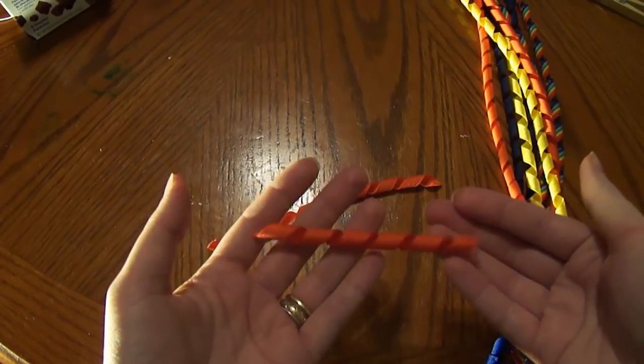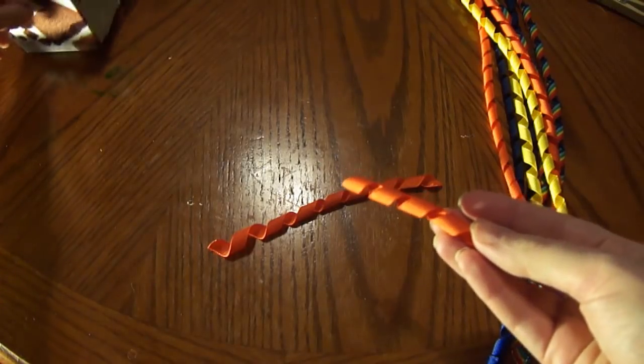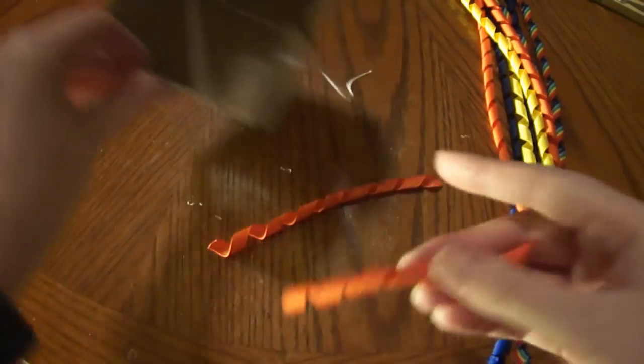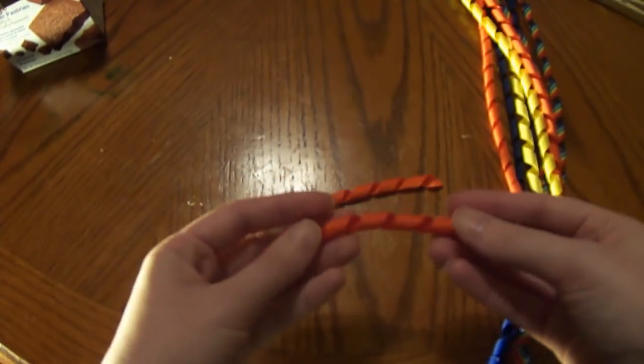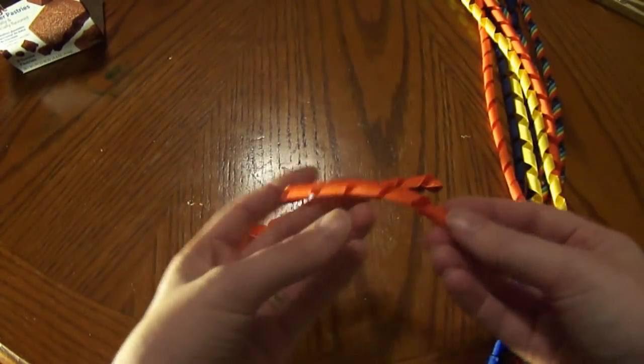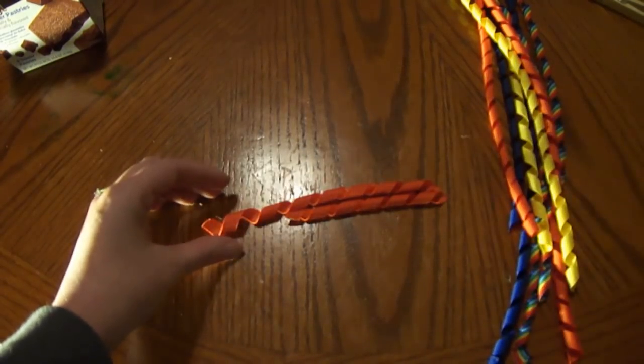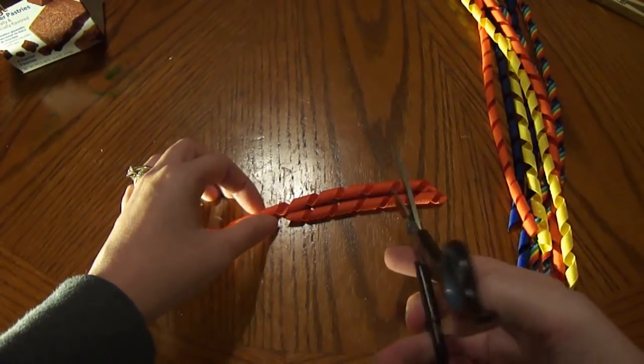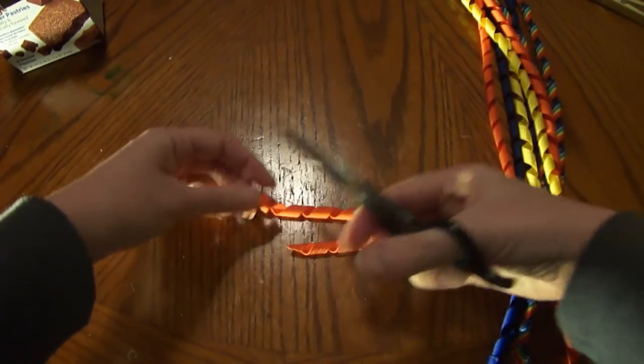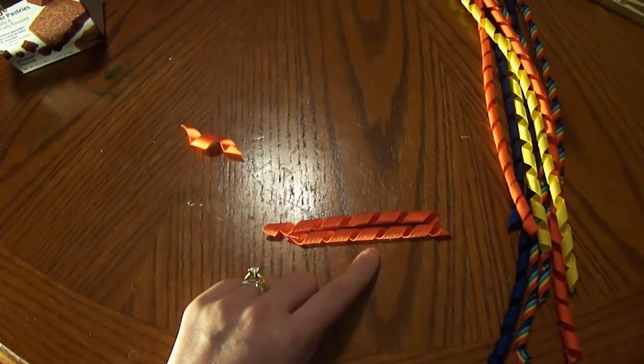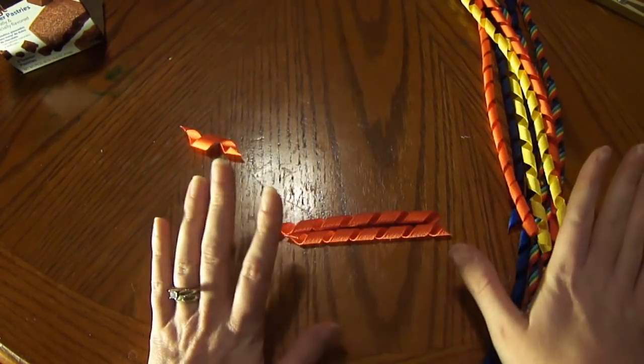I'm going to trim mine down to about three to three and a half inches, just because that's the size that I did my box. If you happen to do your box smaller, you can trim them down smaller. If you did your box larger, you can do them larger. Once you have trimmed all your pieces, you're going to need to heat seal each end. That's very important that you heat seal all your cork ends.